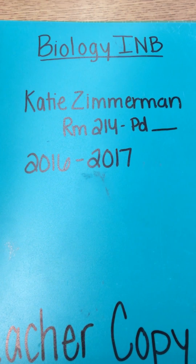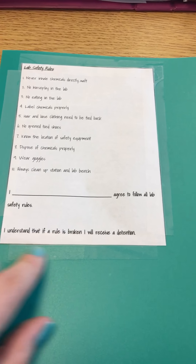So this is your cover. You want to make sure that you include your name, the room that we're in, and the period along with the year. You are more than welcome to put a bunch of pictures on the cover and decorate it as beautifully as you want to. Mine's kind of simple, but you can decorate however you want to.